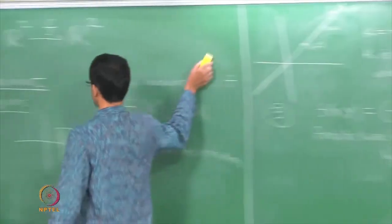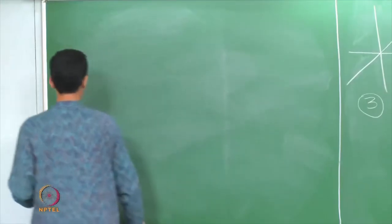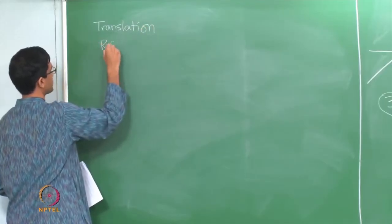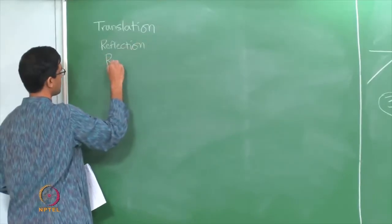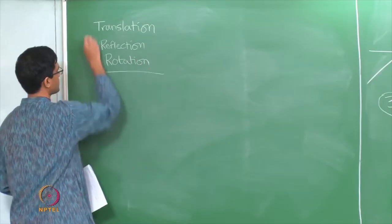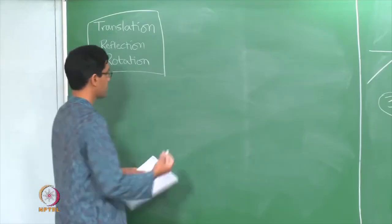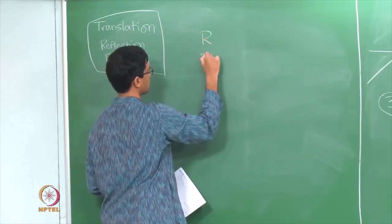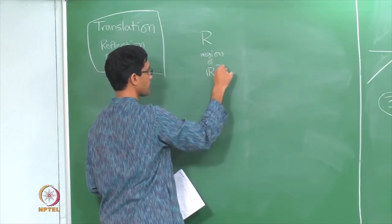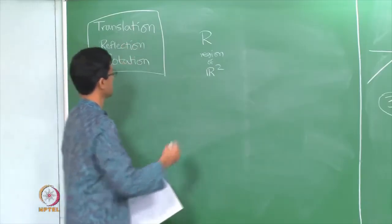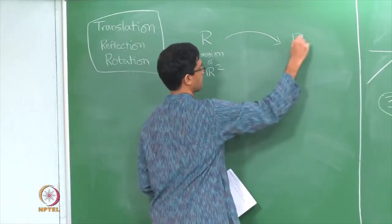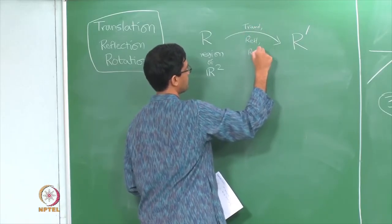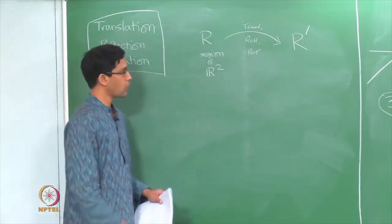We have now looked at three functions: translation, reflection about the x-axis, and rotation through 90 degrees. One interesting aspect of all of them is that they all map a region R to a congruent region R′. If R is any region in R² and you apply any one of these three — translation, reflection, or rotation — it maps R to a congruent region R′.